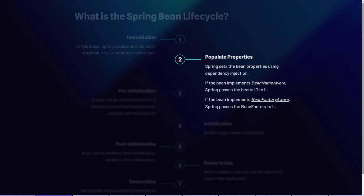The next stage is to populate the properties. Spring sets the bean properties using dependency injection — it can be via field, constructor, setter, or interface-based injections. During this stage, Spring will check if the bean implements the BeanNameAware interface. If yes, it calls the setBeanName() method on the bean during container initialization.